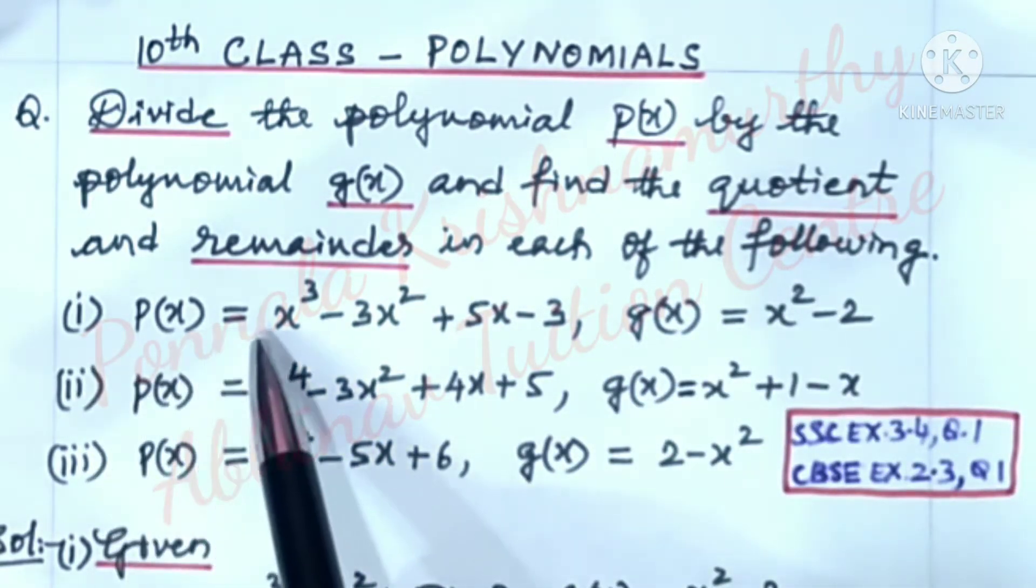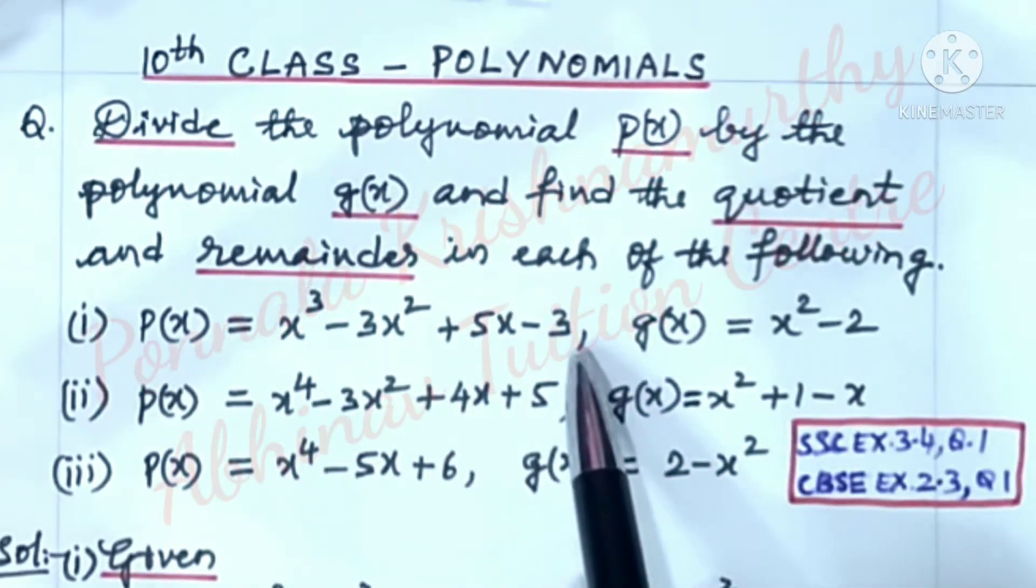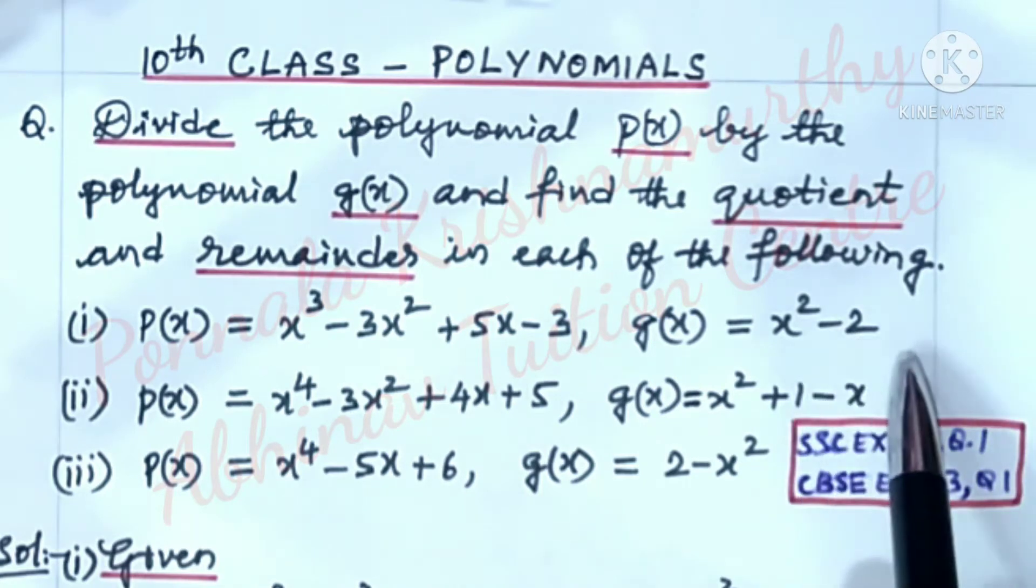1. p(x) is equal to x³ - 3x² + 5x - 3. g(x) is equal to x² - 2.